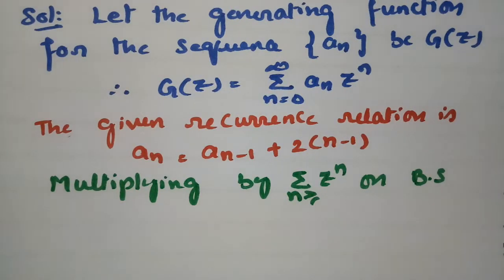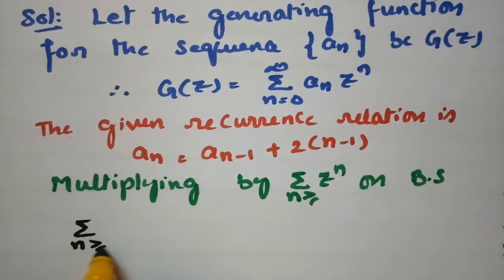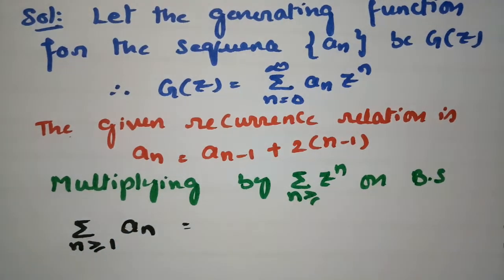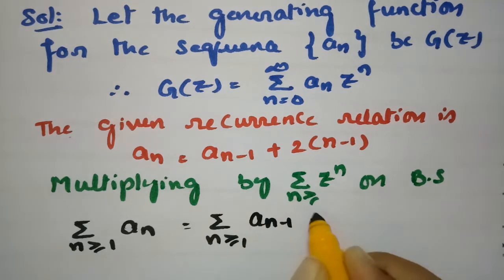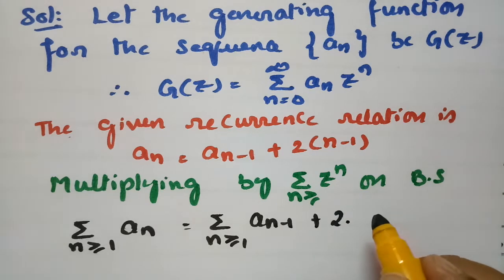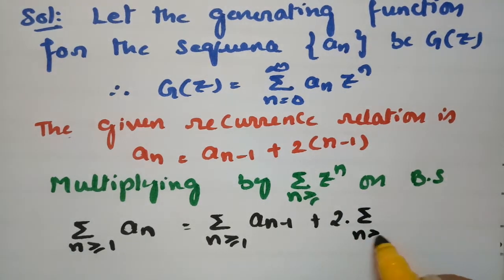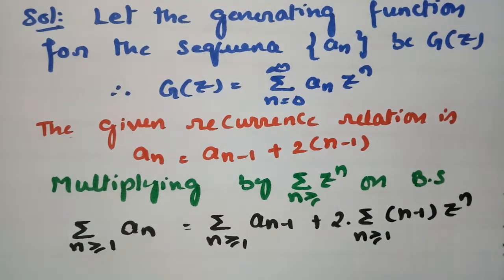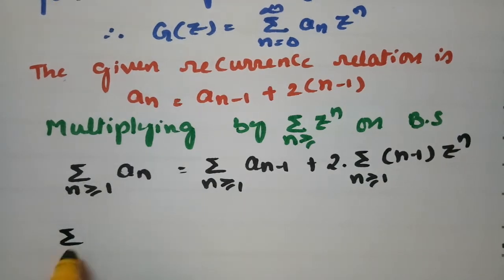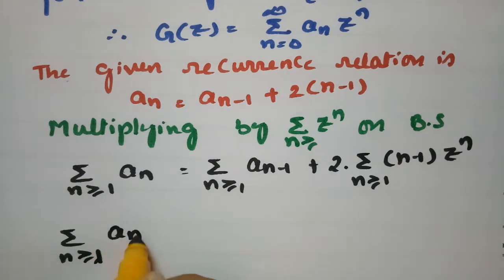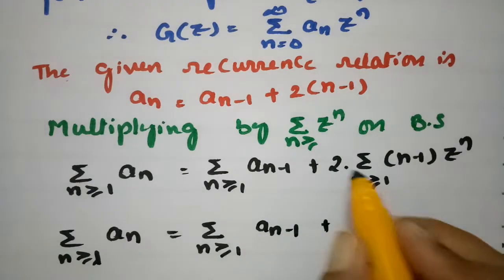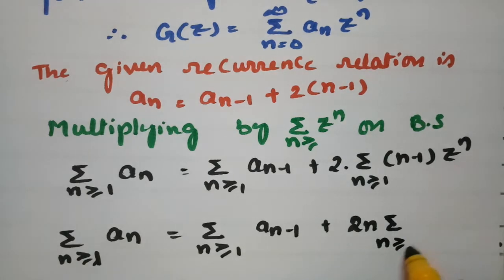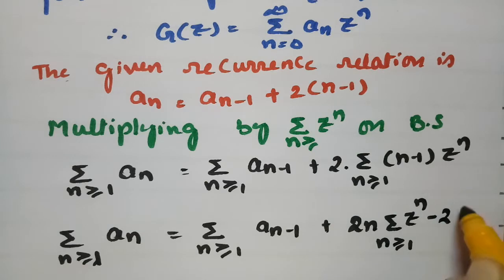Multiplying on both sides gives: Σ (n ≥ 1) aₙ zⁿ = Σ (n ≥ 1) aₙ₋₁ zⁿ + 2 Σ (n ≥ 1) (n−1) zⁿ. This becomes Σ (n ≥ 1) aₙ₋₁ zⁿ plus 2n times Σ (n ≥ 1) zⁿ minus 2 Σ (n ≥ 1) zⁿ.